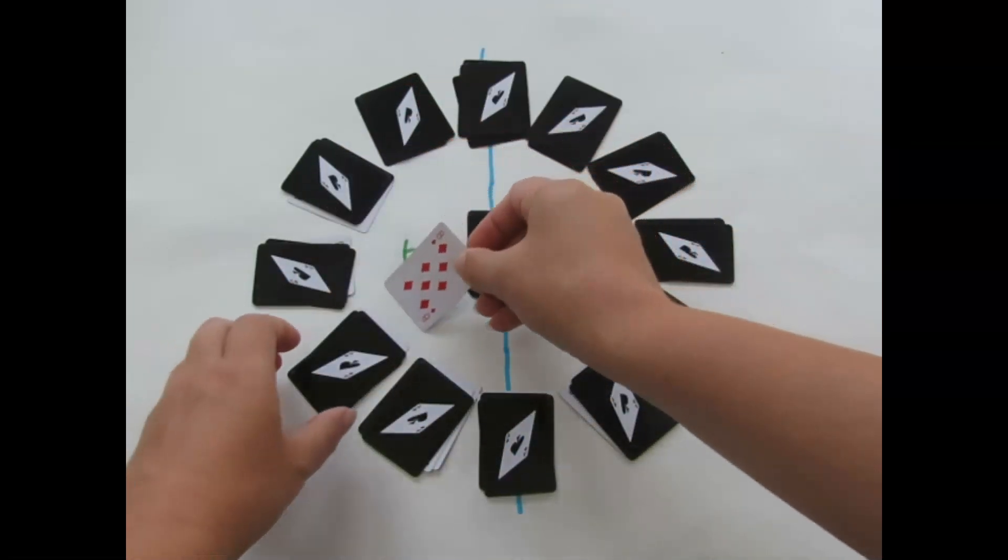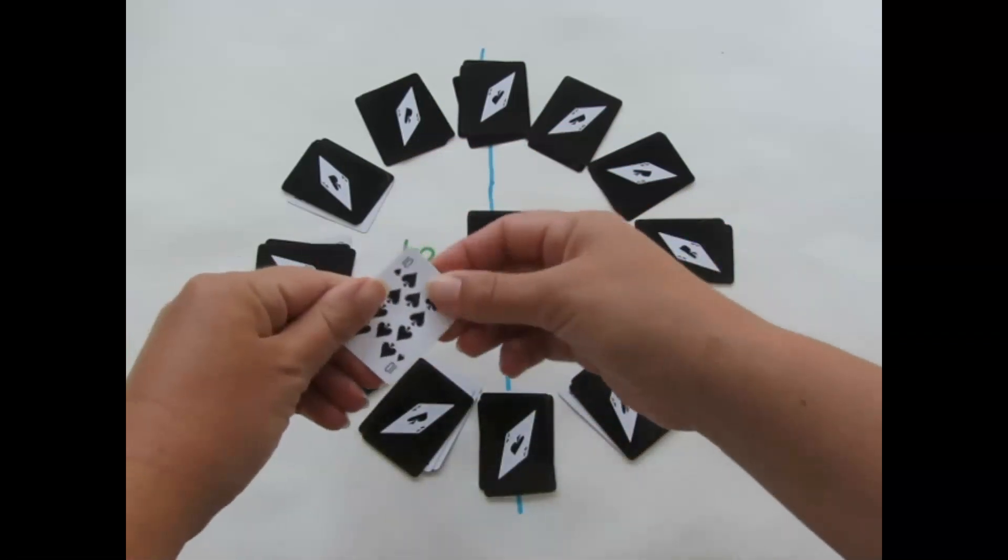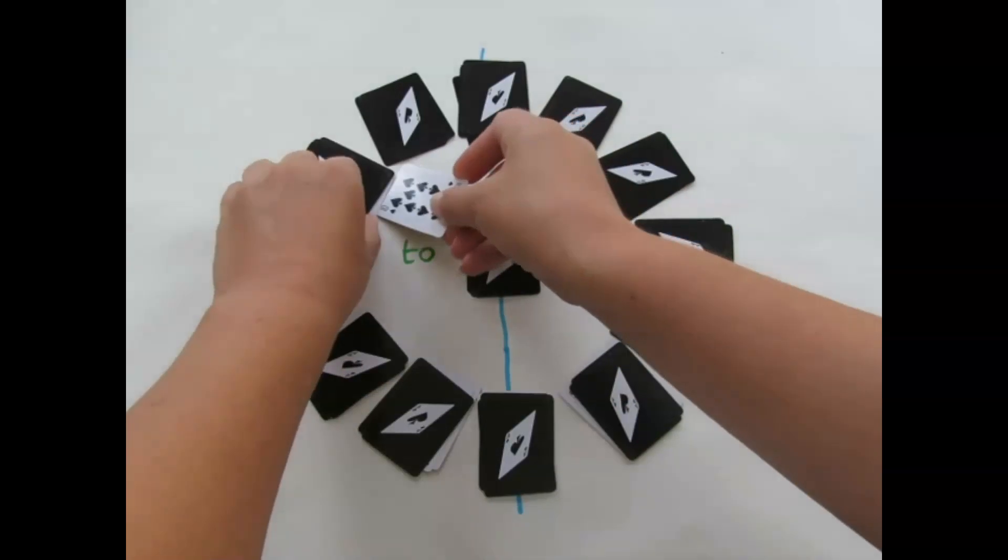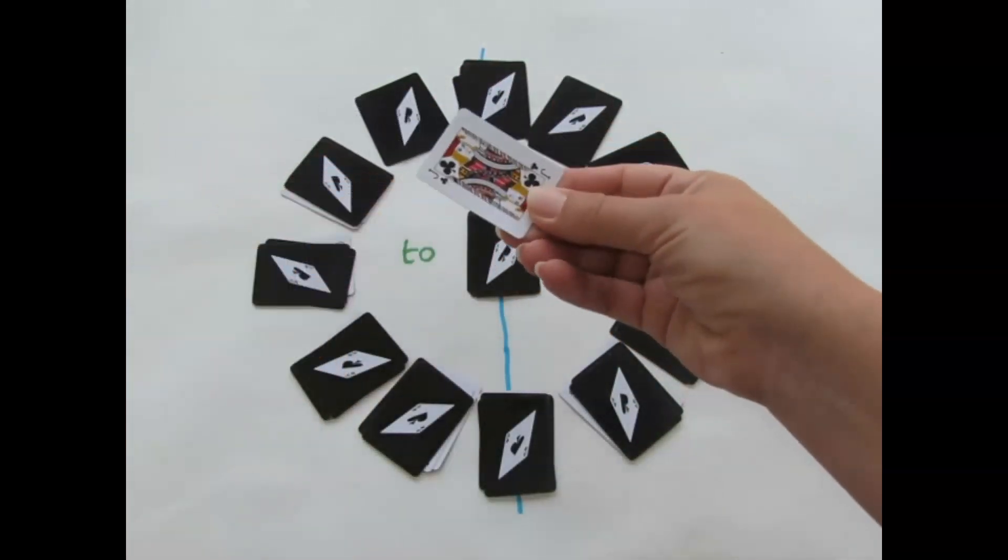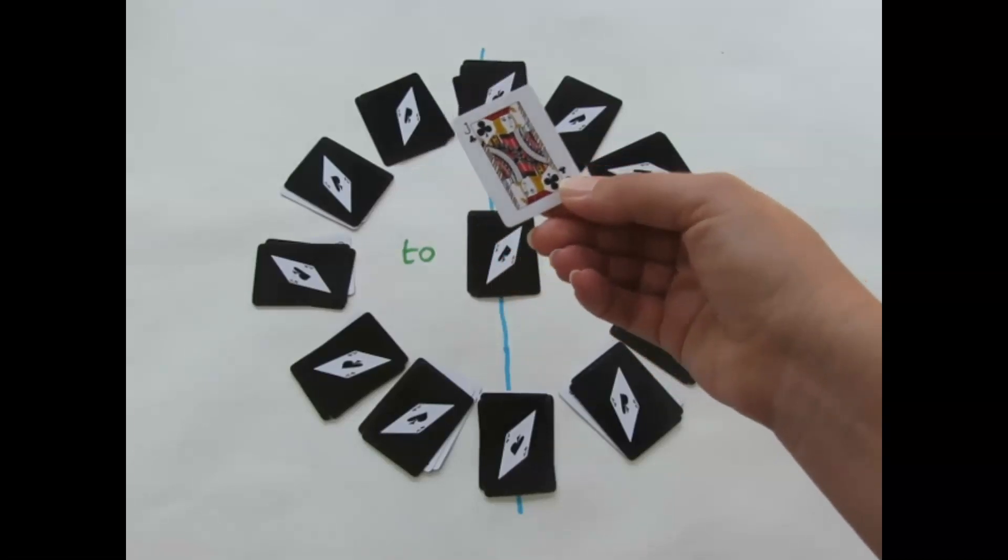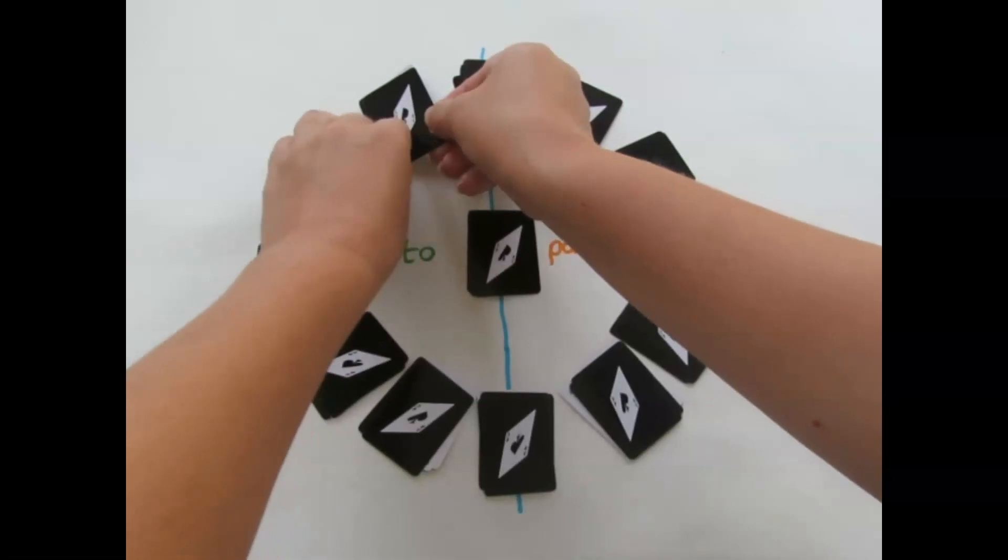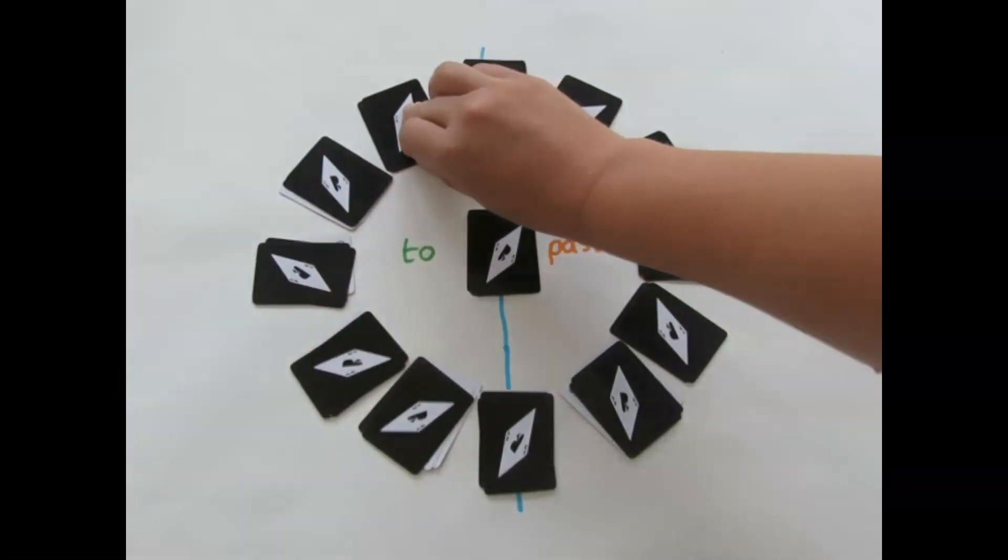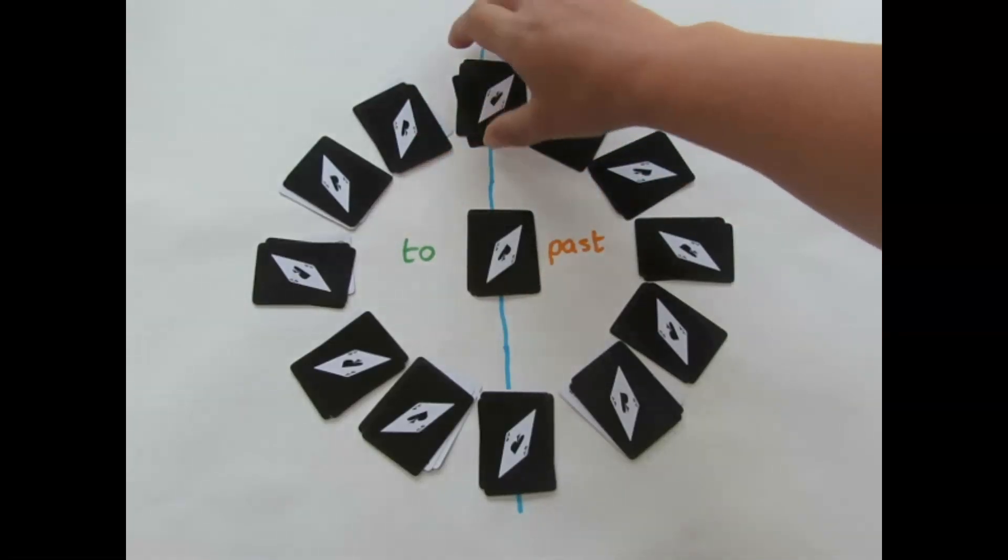I've got another eight. A 10, so that was 50 minutes past, 10, 2. I've got a jack. Remember, jack represents our 11. So my jack would go in here, which would be 55 minutes past, 5, 2.